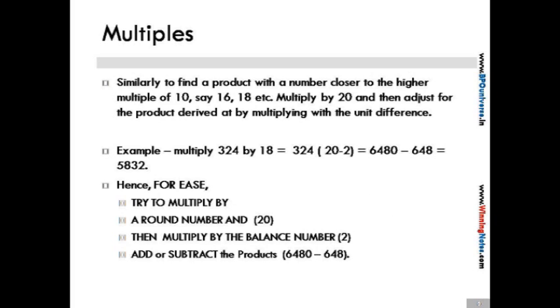So basically what we are trying to do is we are trying to break the number by which we need the multiplication into such units that they are easy to multiply and add or subtract. For example, for multiplying a number by 18, we can multiply the number by 20 and then subtract a product of that number by 2 from this given number. Hence this is how you will try to multiply a number by 18 and get the result.